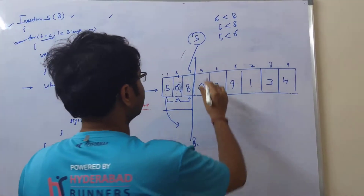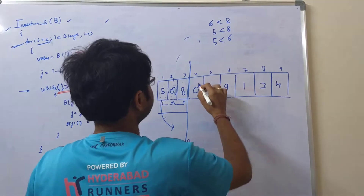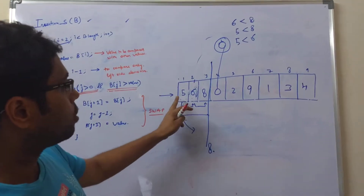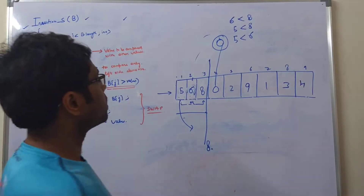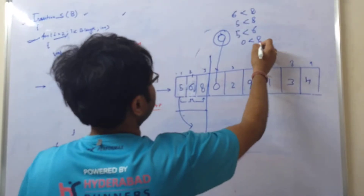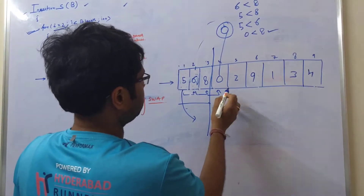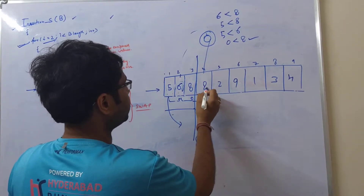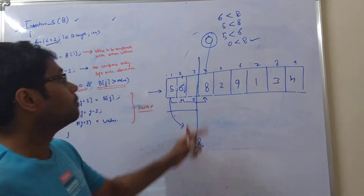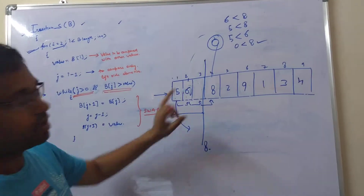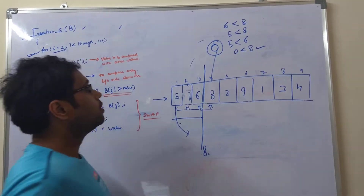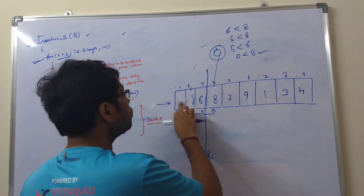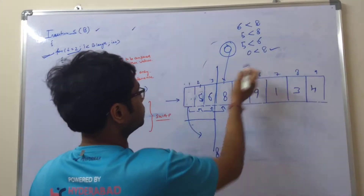Now we take the next number, 0. We compare it with all three remaining elements. Zero is less than 8, so we shift 8. Zero is also less than 6, so we shift 6. Then zero is less than 5, so we shift 5 as well. Zero will be placed at the front. Now our four numbers — 0, 5, 6, and 8 — are already sorted.